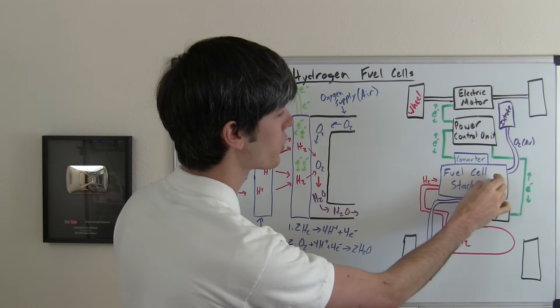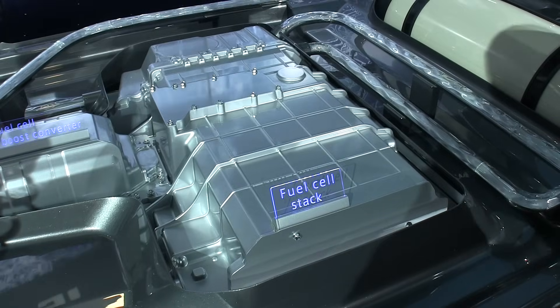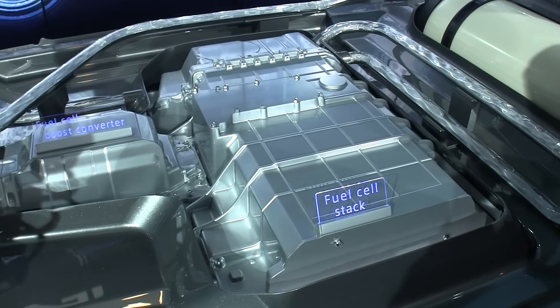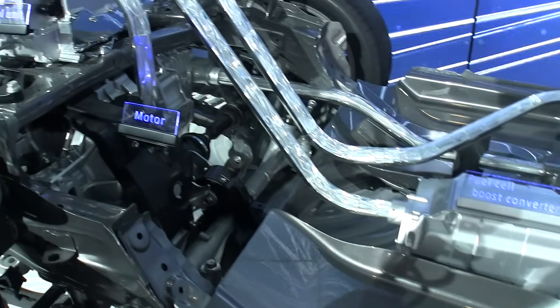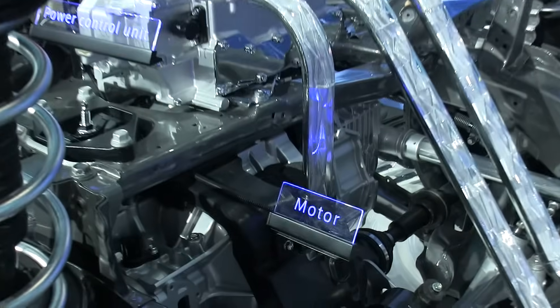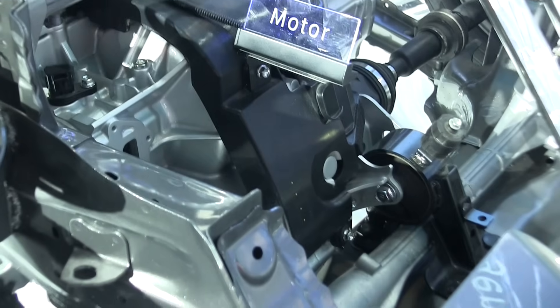Now that energy that is created is then sent to a power control unit. And this power control unit can do several things with the energy. It can either send it as storage to a battery and use it later. Or it can send it directly to the electric motor and then power the driven wheels.